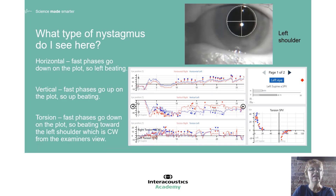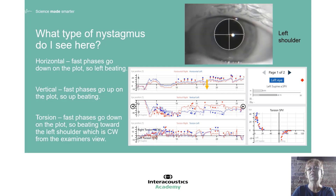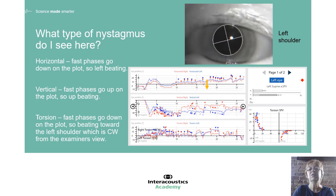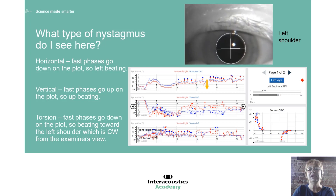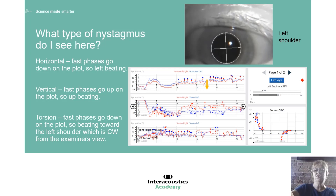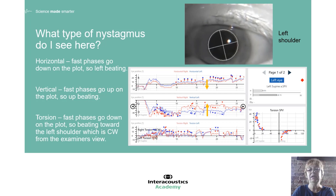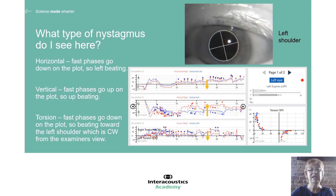So what type of nystagmus do we see here? It looks like the fast phases are going toward the left shoulder — we see that with the downward arrow — and then some up-beating. On the graph, we're looking at the fast phases on the eye position side, and analyzing the slow phase vestibular component on the SPV side. If the slow phases are going to the right, the fast phases have to be going to the left. So here we see a left-beating, clockwise rotation.